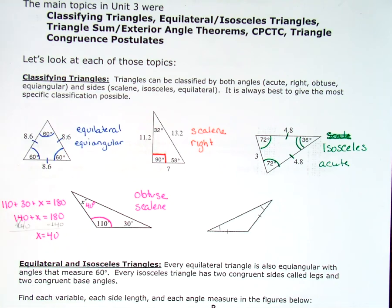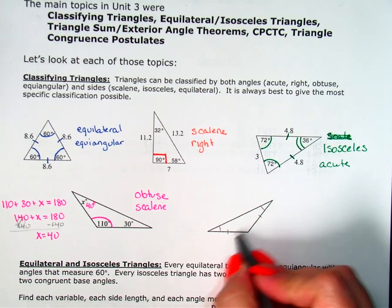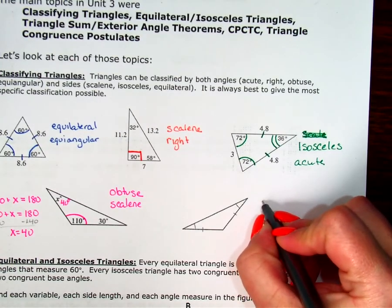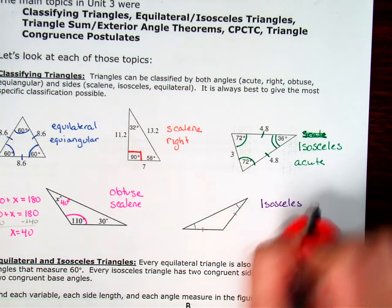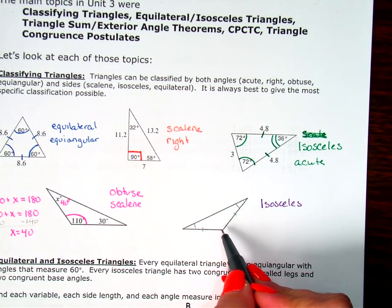All right. On my last triangle, on this one I can see I do have two sides that are marked congruent, so I know we are isosceles.